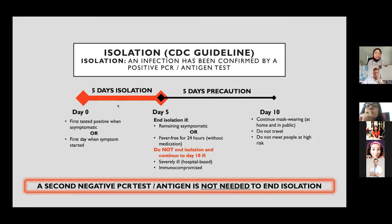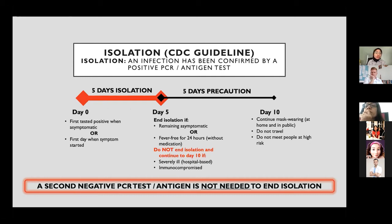The newest CDC guideline for people with mild symptoms: the duration of isolation is five days, counted from day zero. Day zero is when a person tests positive while asymptomatic, or the day when they first had symptoms. For children — especially babies — it can be difficult to determine the first symptom day, so it's better to count from the day they tested positive with antigen or PCR.